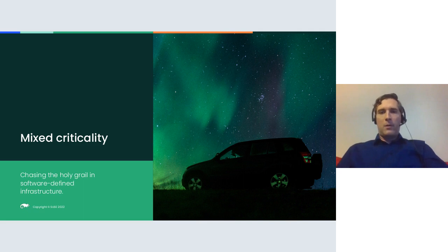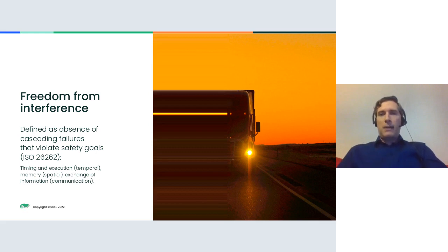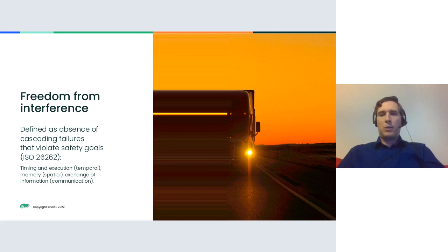Now, what do we actually mean by mixed criticality? A central concept in the automotive market is freedom from interference, originating from the ISO 26262 standard, which defines it as the absence of cascading failures that would violate defined safety goals. There are three types of interference: temporal interference affecting timing and execution of code, spatial interference related to memory, and communication interference for exchange of information.